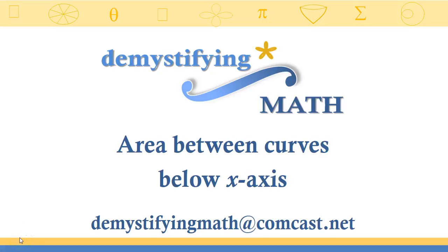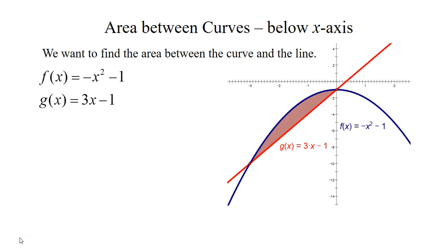Welcome to Demystifying Math. In this lesson we're going to find the area between two curves where both curves are below the x-axis. We're going to use the parabola negative x squared minus 1 and the line 3x minus 1. So if we want the area in between them we would have the shaded region that's shown on the screen.